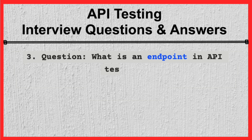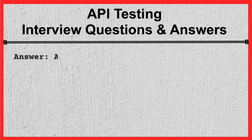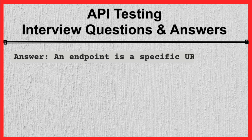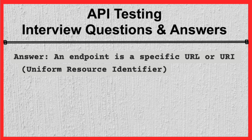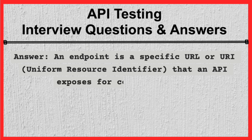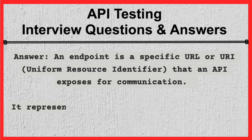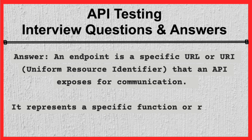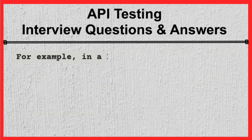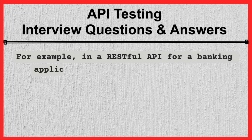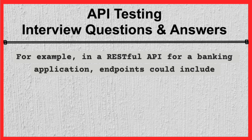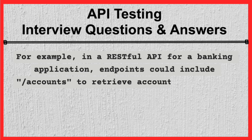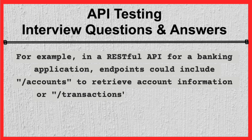Question 3. What is an endpoint in API testing? Answer. An endpoint is a specific URL or URI, uniform resource identifier, that an API exposes for communication. It represents a specific function or resource in the API. For example, in a RESTful API for a banking application, endpoints could include accounts to retrieve account information, or transactions to get a list of transactions.